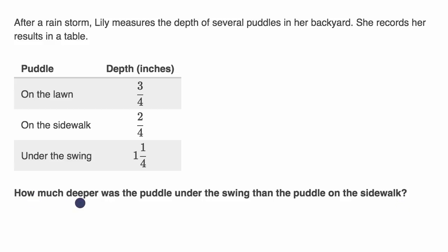So they say, how much deeper was the puddle under the swing? So that's this one right over here. That's one and one fourth inches deep. It's under the swing. How much deeper was that than the puddle on the sidewalk? Let me do that in a different color. The puddle on the sidewalk. And we see here, the puddle on the sidewalk is two fourths inches deep.